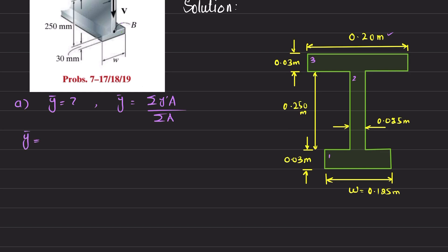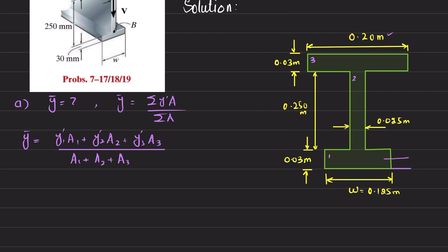The formula expands to: ȳ = (ȳ₁·A₁ + ȳ₂·A₂ + ȳ₃·A₃) / (A₁ + A₂ + A₃). ȳ₁ is the distance from the bottom to the centroid of section 1, which is 0.03/2 = 0.015 meter. ȳ₂ is the distance from the bottom to the centroid of section 2.